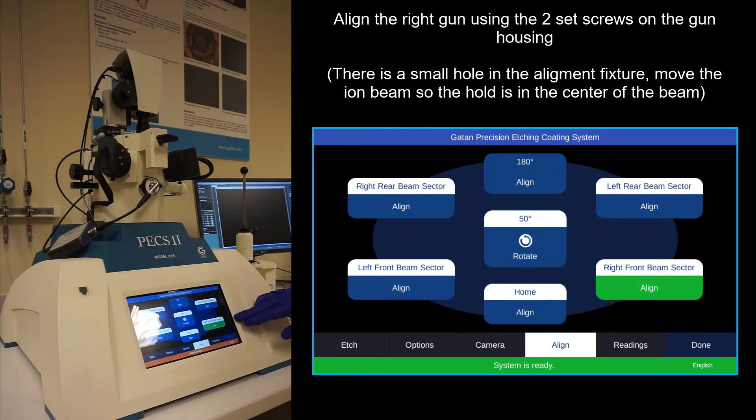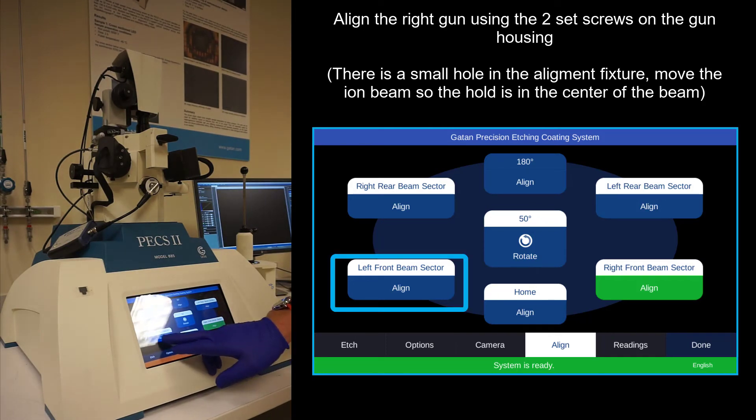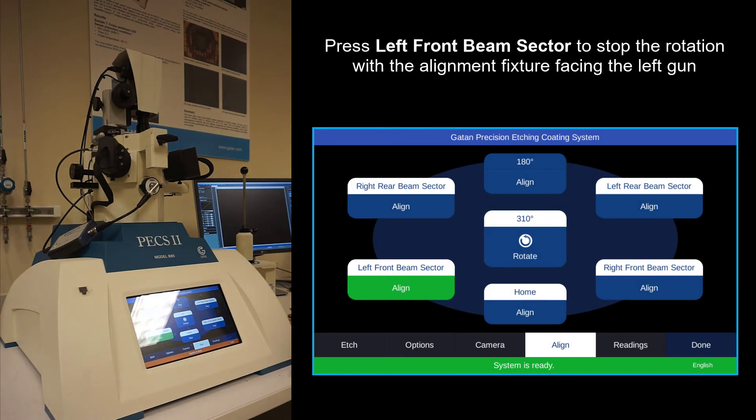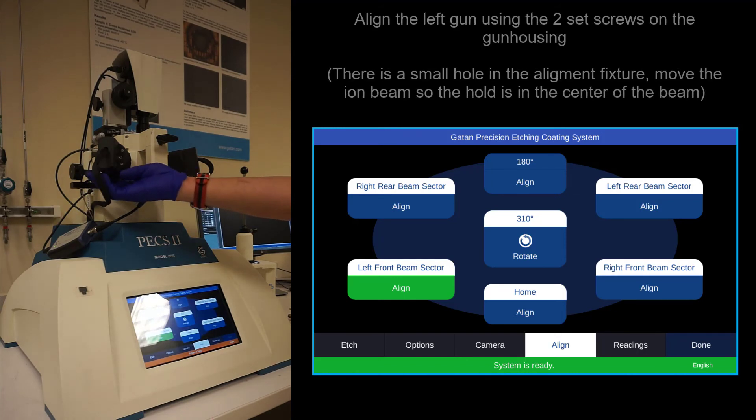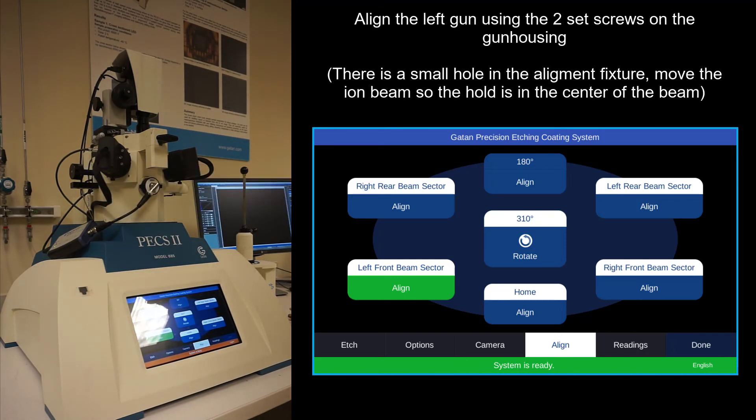And then once you have the right gun aligned, then you will go to the left gun. And then same thing here, you have the two set screws, one horizontal, one vertical. And then align the gun.